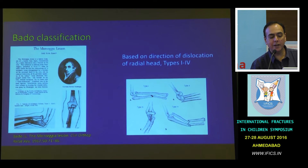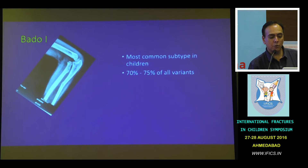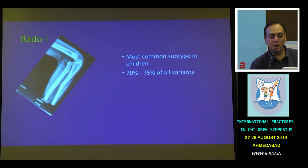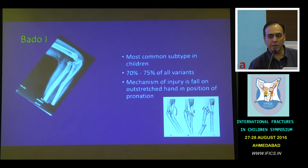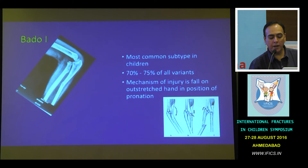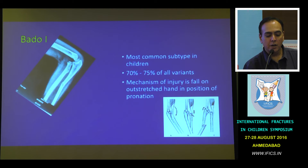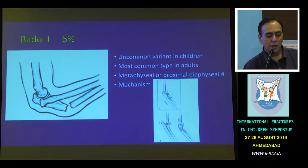In Bado Type 1, there's an anterior dislocation of the radial head with a fracture of the ulnar diaphysis. It's the most common variant in children, constituting about 70 to 75% of all these injuries. The mechanism of injury is a fall on the outstretched hand in a position of pronation. In pronation, the ligaments in the proximal radius become lax, so violent contraction of the biceps pulls the radial head out, and all the load gets transferred onto the ulnar shaft, which then breaks in tension on the anterior side.